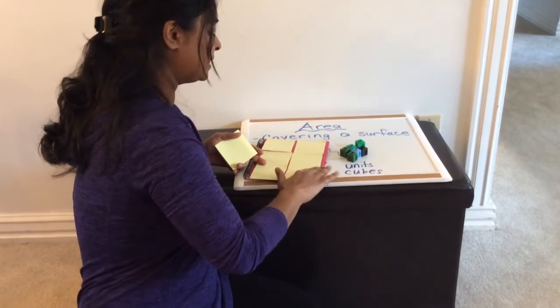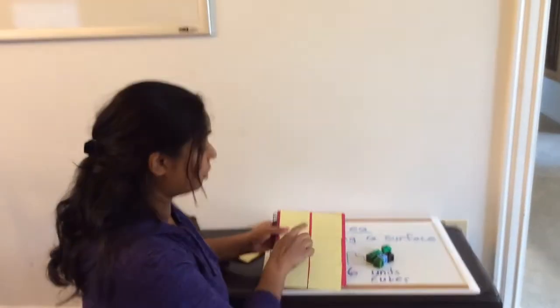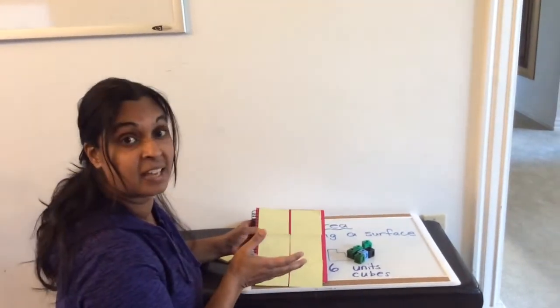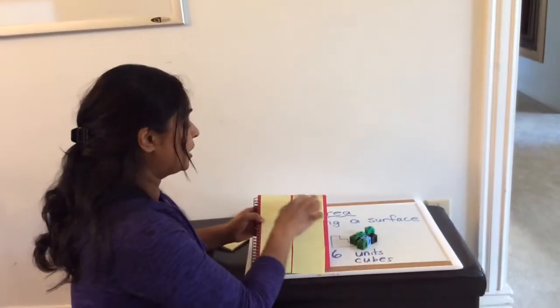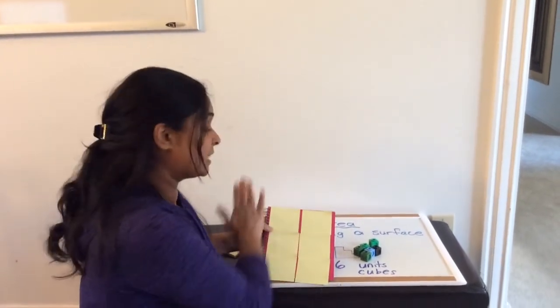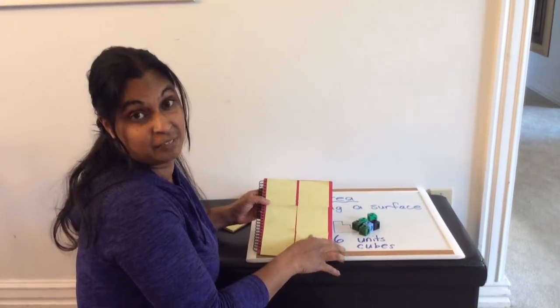So we can see that this is not an actual measurement because I've got some spaces that aren't covered. But we can say that it is about one, two, three, four, five, six sticky notes. The area is about six sticky notes to cover the cover of this book.